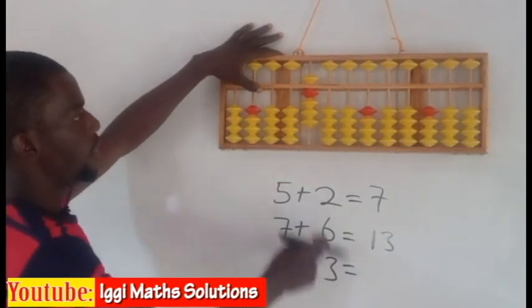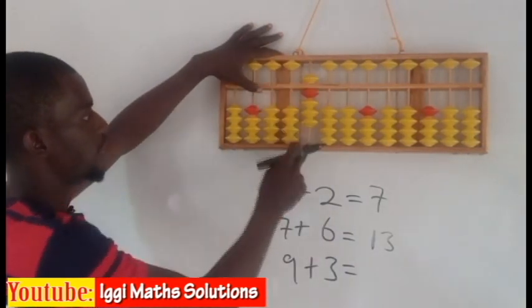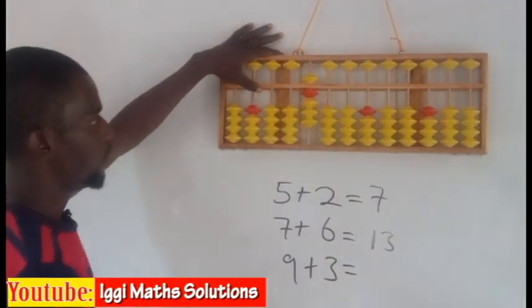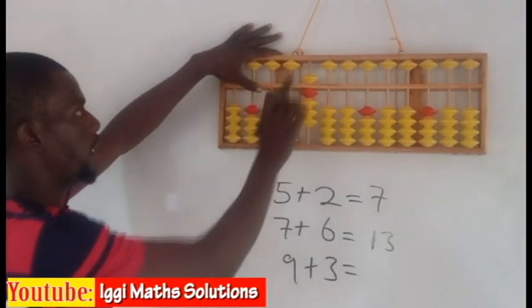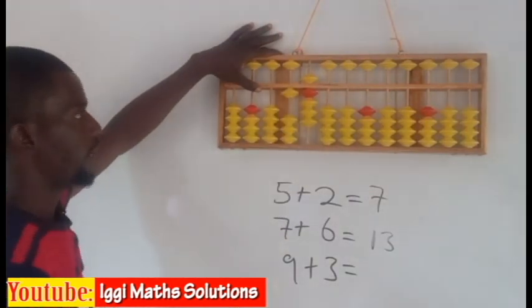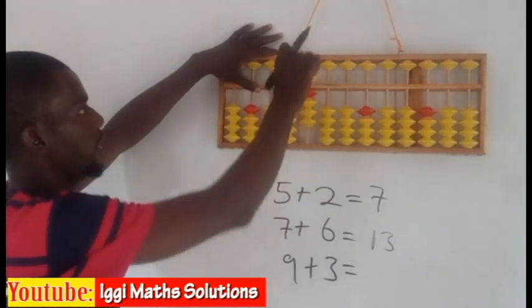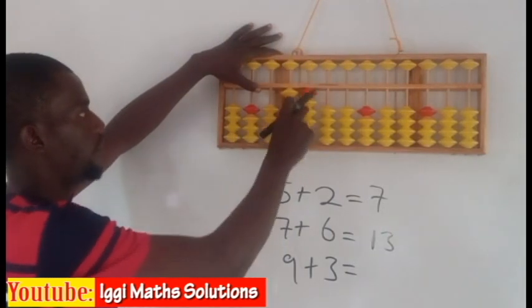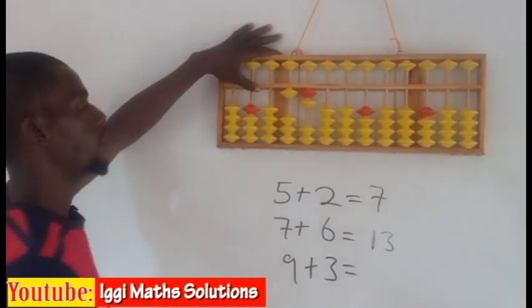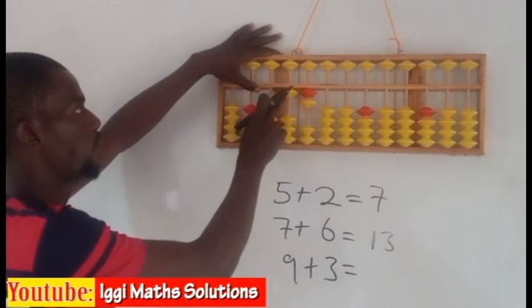then plus 3. So I don't have any beads left on the unit rod, so I have to go to the 10s rod. So I have to borrow one 10 and subtract 7. So on the unit rod, I have to subtract 7. Here, I have 5. Then I have to subtract 2 also. So that the value in the abacus is 12.